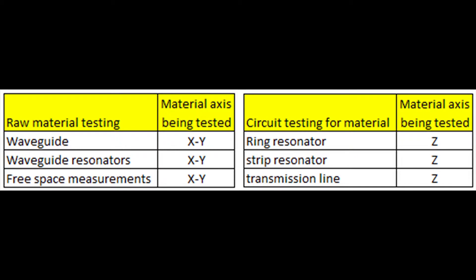In the table shown here, there are different test methods. The two groups are raw material testing and circuit testing to characterize material performance for dielectric constant. For raw material testing, we're looking at waveguides, waveguide resonators, sometimes waveguide cavities, and free space measurements. One drawback for these methods is that they test the x-axis, y-axis, or xy plane of the material, whereas designers are typically interested in the z-axis dielectric properties. The table on the right shows circuit-based testing, which allows you to determine the z-axis dielectric constant and other material properties.